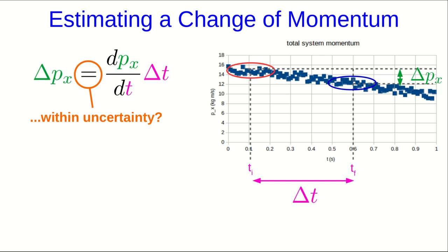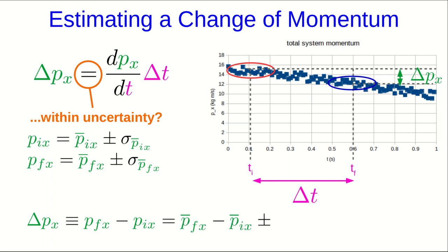But we can get at least an approximate uncertainty for the left hand side. So you will have an estimate of your initial and final momentum with best estimates and uncertainties. Your change in momentum is just the difference between those. Well, that's just going to be the difference between the best estimates. But how do you get the uncertainty in that?